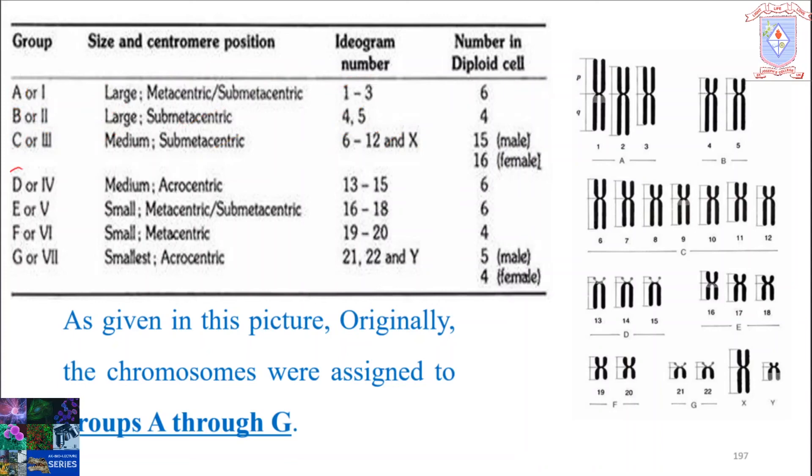Then in Group D, or Group 4, come the 13th, 14th, and 15th chromosomes. They are medium in size and they are acrocentric.